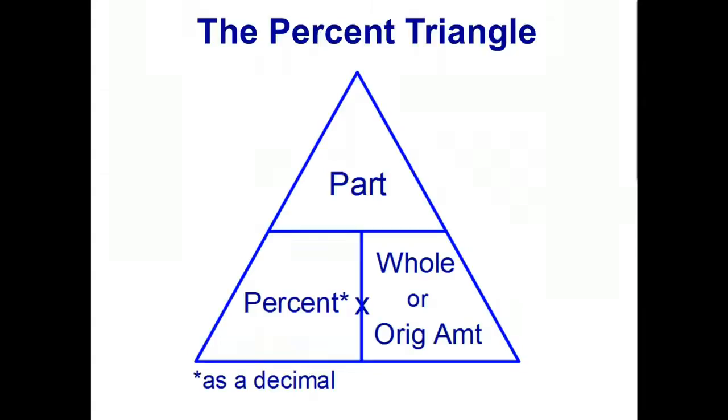And it turns out that all of these problems can be solved by using the formulas that are built into what's called the percent triangle. So looking at the triangle, there's the part, and that equals the percent as a decimal multiplied by the whole amount, or sometimes we say by the original amount. So that's our first formula.